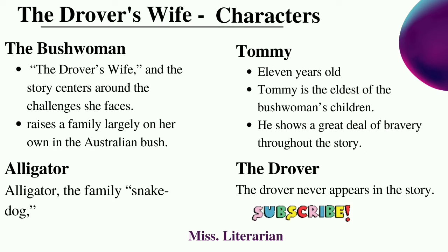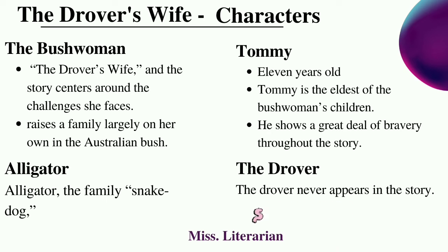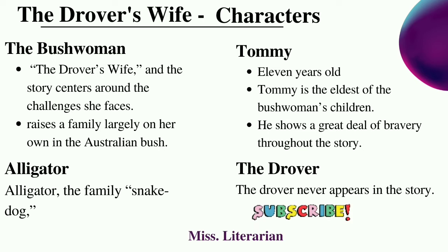Let us see the characters of this short story. First is the bush woman — she is an unnamed bush woman and the main character. The story centers around the challenges she faced in raising her family on her own in the Australian bush. Next is Tommy, who is 11 years old and the eldest of the bush woman's children. Tommy's character is a brave one. Alligator is the family's snake dog, which attempts to kill a snake at the beginning of the story.